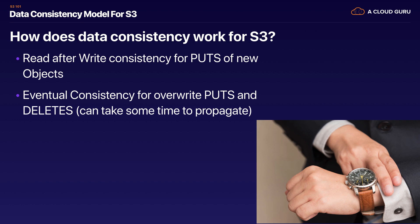If you update or delete an object — overwrite it — then it's only going to be eventual consistency. So if you upload version two of a file and immediately try to read it, you might get version one or you might get version two. But if you wait about a second, you're always going to get version two. So there's eventual consistency for overwrite puts and deletes.